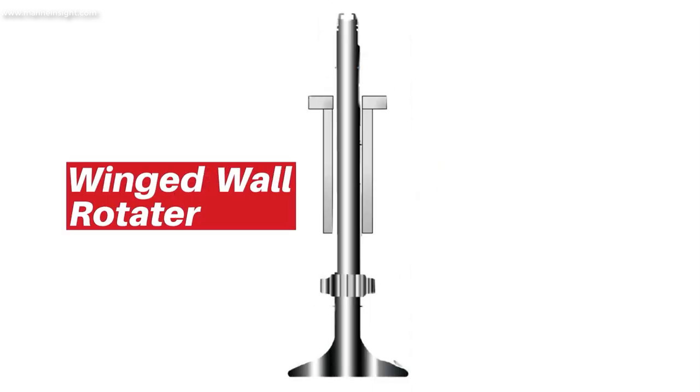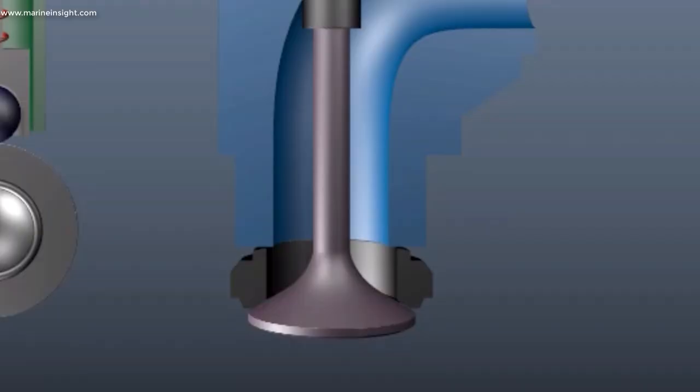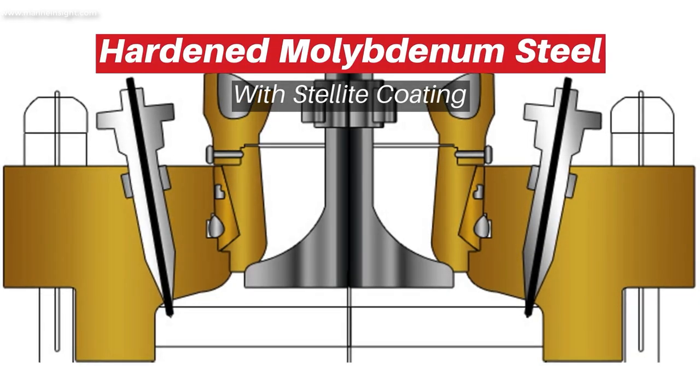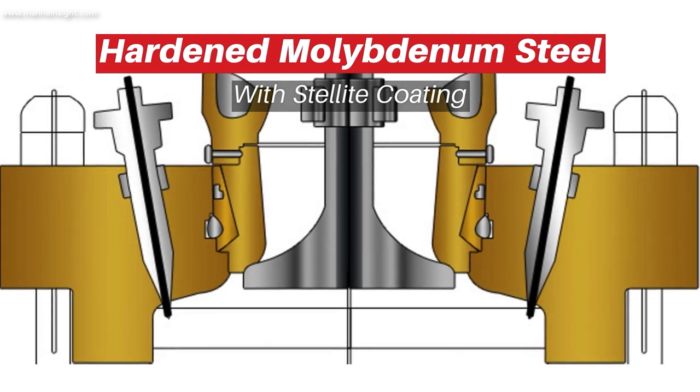The valve spindle is fitted with winged valve rotator. Exhaust valve seat. The exhaust valve seat is a renewable valve seat which can be reconditioned or replaced in case of damage. It is usually made from hardened molybdenum steel with stellite coating for good temperature resistant property.